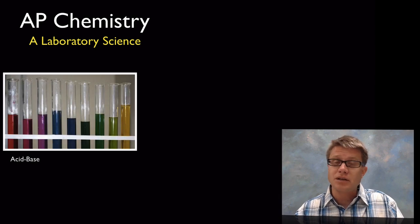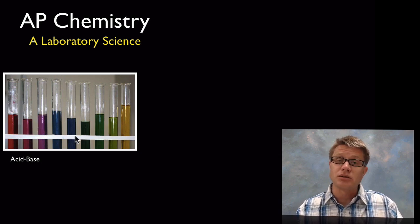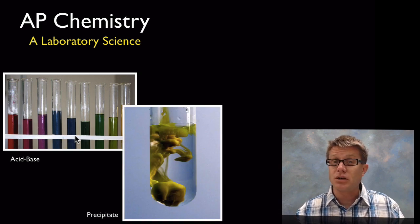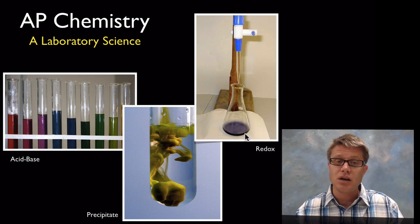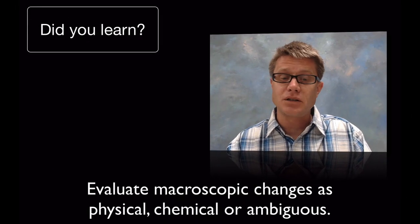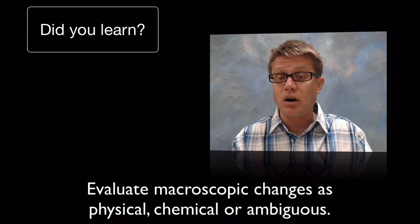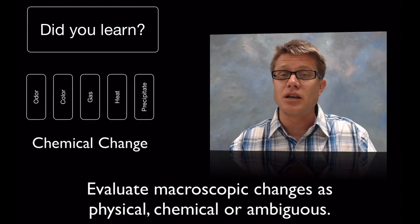What are some chemical changes you should get used to measuring in the laboratory? One would be acid-base changes. Here's a wonderful picture where we're taking red cabbage juice and adding substances of different pH to it — you can see a color change, which indicates a chemical change has occurred. Another one would be formation of a precipitate, or formation of a solid, which is also an indication of chemical change. And then there are redox reactions — this here is a redox titration. It could be an acid-base titration where we see a color change based on an indicator, or it could be the reduction of a substance causing that color change. So, did you learn to evaluate macroscopic changes and classify them as physical, chemical, or unknown? Look for evidence of chemical change. I hope that was helpful.